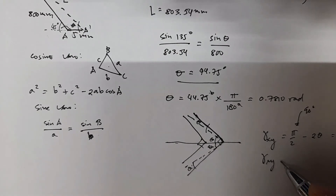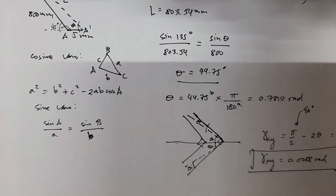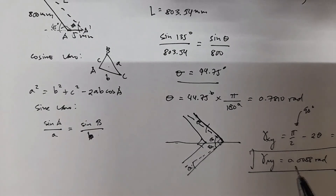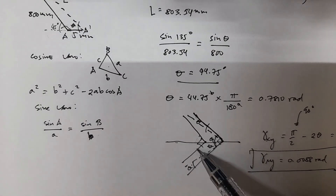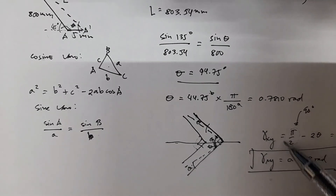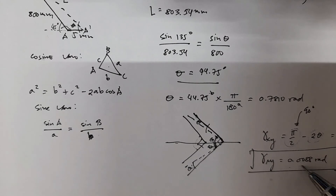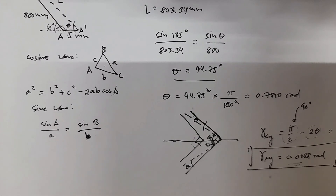So the shear strain gamma_xy at point A equals 0.0088 radians. This is the value of the angle that has been changed — the change from the original 90 degrees to the new angle (2 theta). The original minus the new angle equals the change in angle, which is technically the shear strain xy at point A.